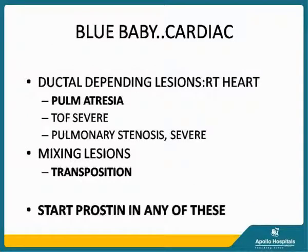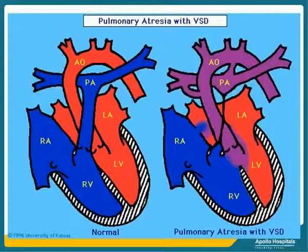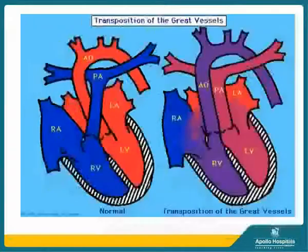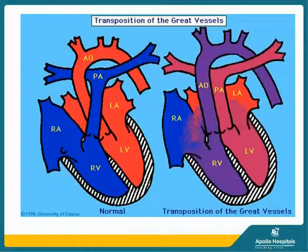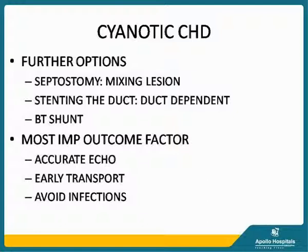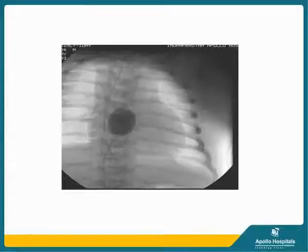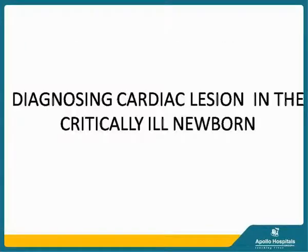Other cyanotic heart diseases: ductal-dependent conditions include pulmonary atresia, severe TOF, severe pulmonary stenosis, or mixing lesions like transposition. In any of these cases, prostaglandins need to be started early. In pulmonary atresia, a duct-dependent lesion, there would be no flow in the pulmonary artery if the duct closes — hence prostaglandin to keep the ductus open is essential. Starting prostaglandin in transposition adds to pulmonary blood flow by opening the ductus arteriosus. Further options include septostomy, stenting the duct in duct-dependent lesions, or a BT shunt. Most important outcome-related factors are an accurate echo, early transport, and avoiding infections. This image shows septostomy being done in a baby.